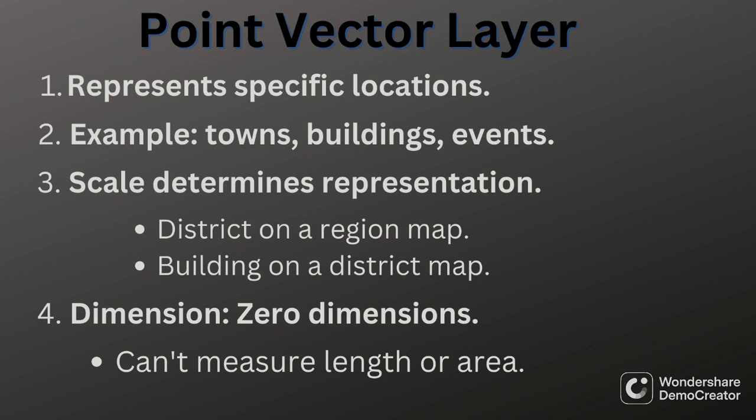The scale of your map will determine what is represented as a point. When you have a very detailed map of a neighborhood, points will probably be the trees or electric grids. If you have a map of the nation, then the districts might become points, and houses instead of polygons will become points. Point vectors have no dimension, meaning you cannot measure their length or area — it is said to have zero dimensions.